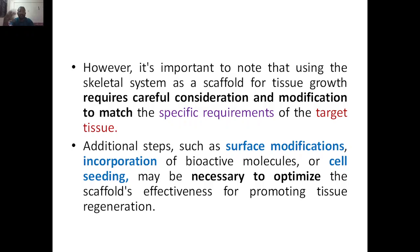There are additional steps involved. For example, surface modification: once the scaffold is ready, you cannot directly incorporate it inside the body. You need to check the external environment, how exactly the surface should be — whether it should be hard or soft, hydrophobic or hydrophilic — and based on that, modify the surface of the scaffold. Another step is the incorporation of bioactive molecules. Along with the scaffold, we add growth factors, which act as bioactive molecules to facilitate cell proliferation and division, so that tissue formation happens faster.